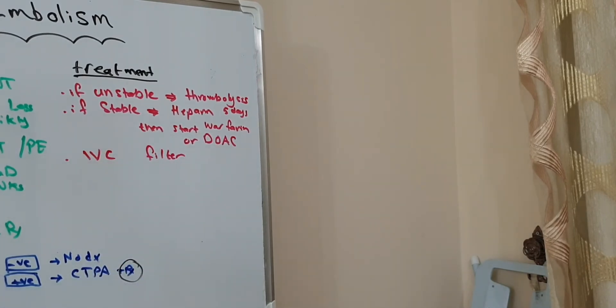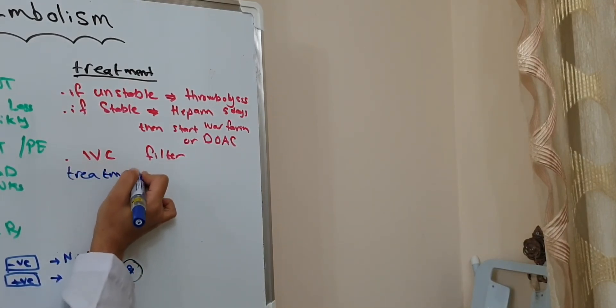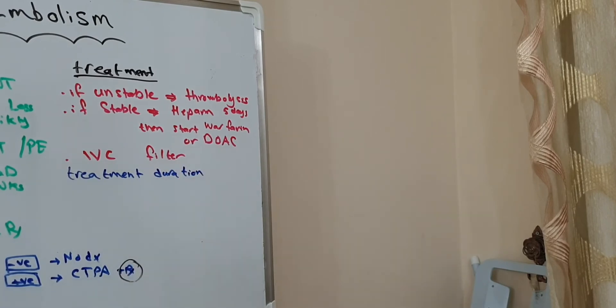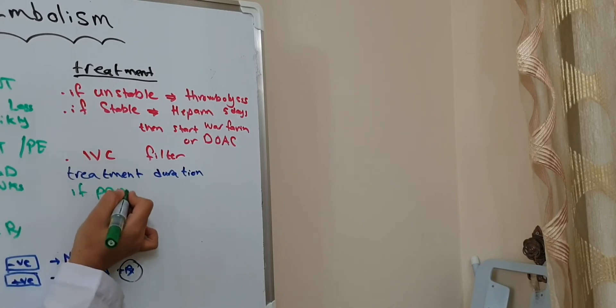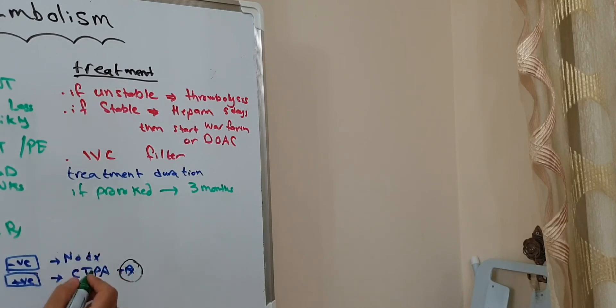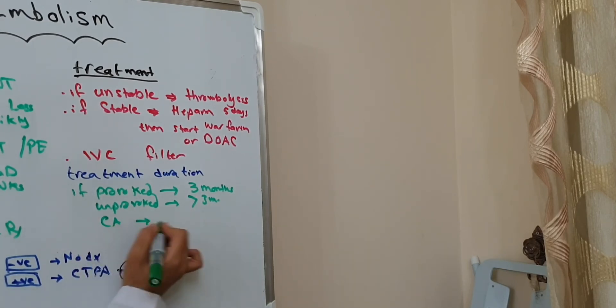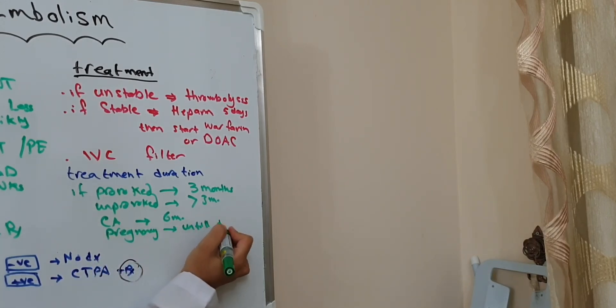Another treatment is IVC filter. The duration of treatment differs according to the diagnosis. If provoked pulmonary embolism - meaning we know the cause - we give treatment for three weeks to three months. If unprovoked, we give three to six months. If the diagnosis is cancer, continue for six months. If the diagnosis is pregnancy, give until delivery. Thank you.